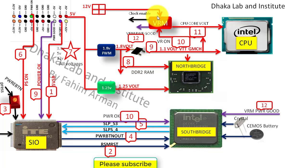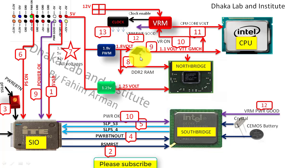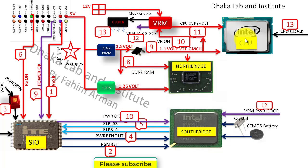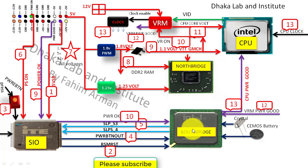Then the VRM section will enable the clock IC, and the clock IC will generate clock pulses and signals to all required parts. CPU clock also enters the CPU, and then the CPU will generate a BID signal to the VRM chip. Then the South Bridge will also provide CPU power good to the CPU.